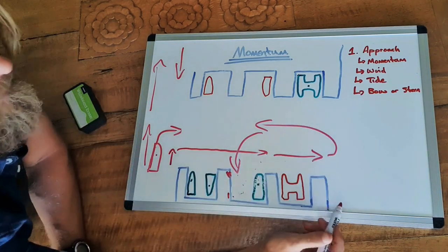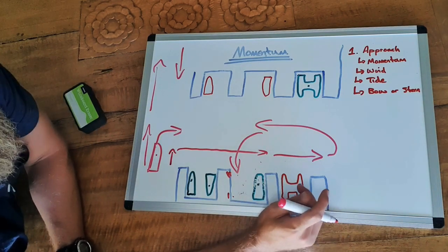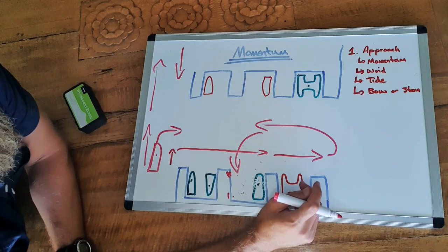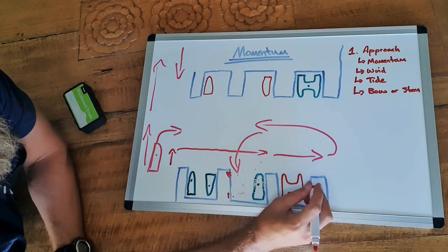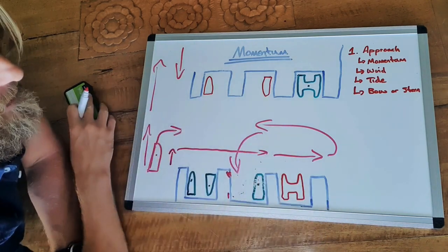This turn here, if this is a narrow gap in between the fingers, can be executed as a J turn, and we will do that in another episode. And that is the effect of momentum.